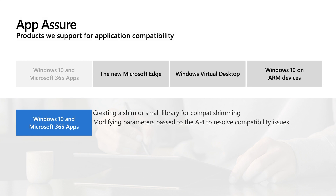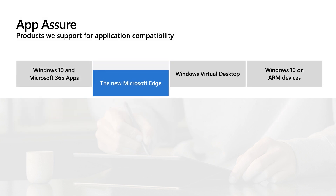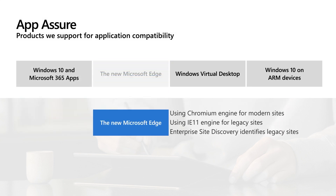For shimming, we work with you to create a shim — a small library where we modify the parameters being passed to the API to resolve compatibility issues. For Edge, IE mode makes it easy to use all the sites your organization needs in a single browser. Edge uses the integrated Chromium engine for modern sites and the Trident MSHTML engine for IE 11 for legacy sites. A common compatibility concern for Edge is with display and functionality issues that occur when accessing a site designed with legacy dependencies. These issues can be remediated by adding the site to the enterprise mode site list to utilize IE mode. A helpful tip is that using enterprise site discovery can help you identify these legacy sites and configure your enterprise mode site list successfully.